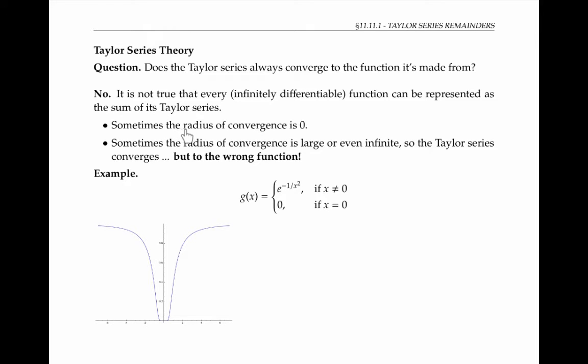Sometimes the radius of convergence is zero. And sometimes, even though the radius of convergence is larger, even infinite, the Taylor series converges, but it converges to the wrong function.